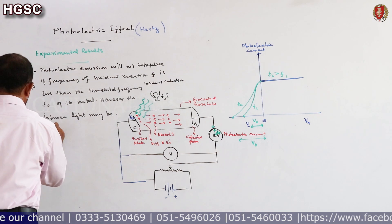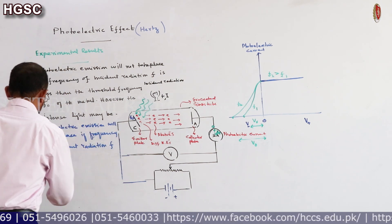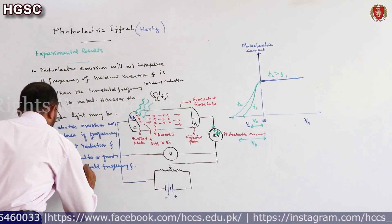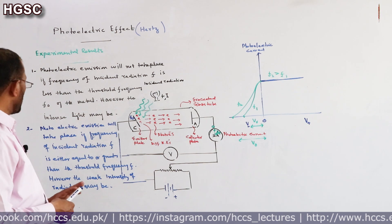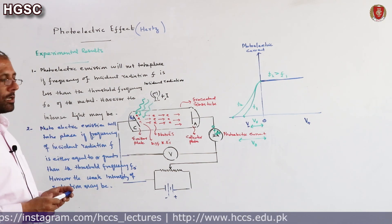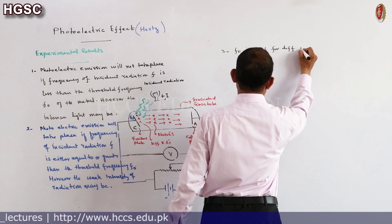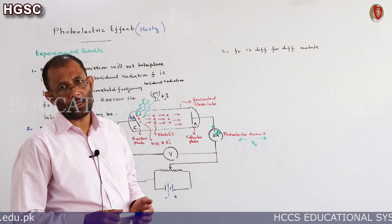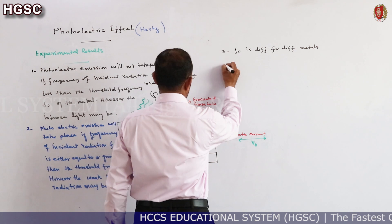Second result: photoelectric emission will take place if the frequency of incident radiation F is either equal to or greater than the threshold frequency, however weak the intensity of radiation may be. Third result: threshold frequency F0 is different for different metals — a light that causes photoelectric effect in one metal may not cause it in another.